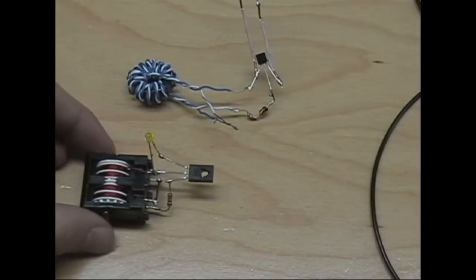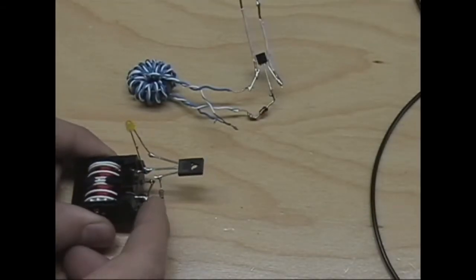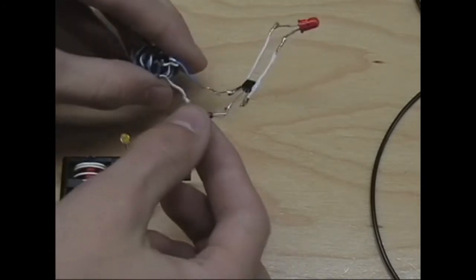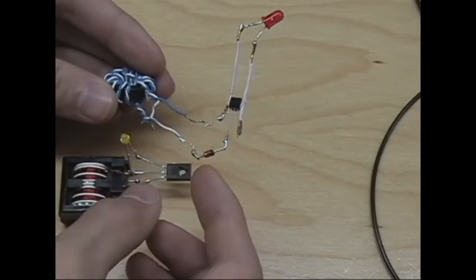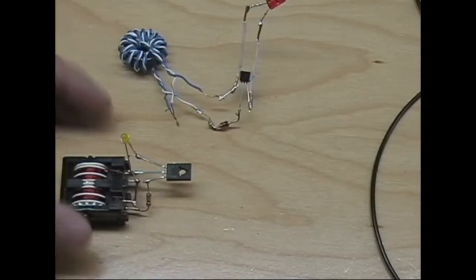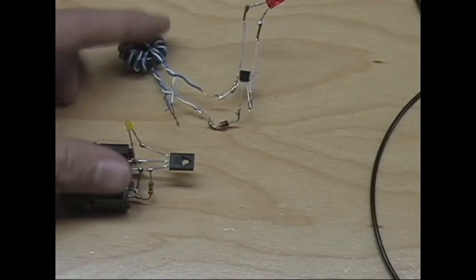These are two of my Joule Thief circuits. One I'm using a 1K resistor for the base, and the other I'm using a 12V Zener diode for the base. And they both work the same.